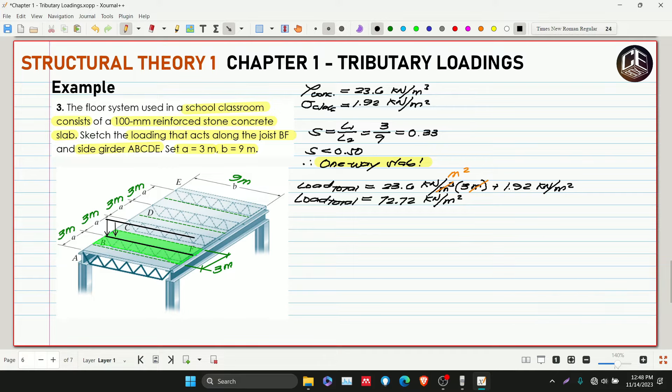This can be distributed for BF. We'll call this W1. W1 is equivalent to 72.72 kilonewton per meter squared. Wait, sorry, this is wrong.